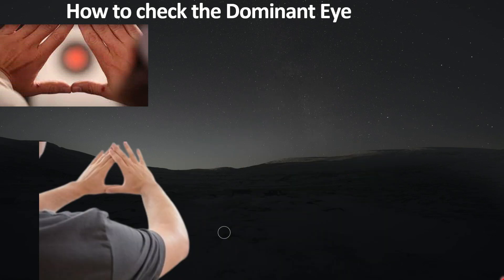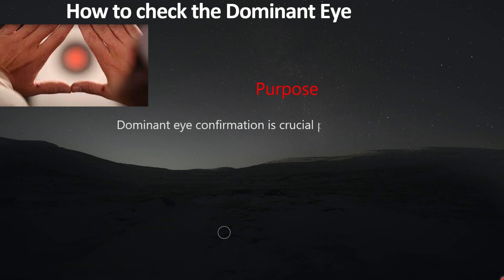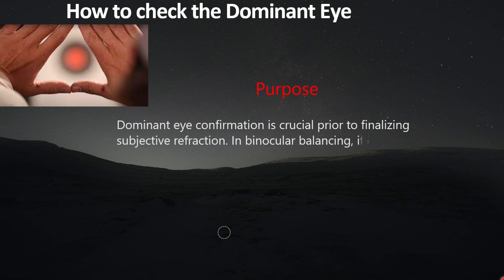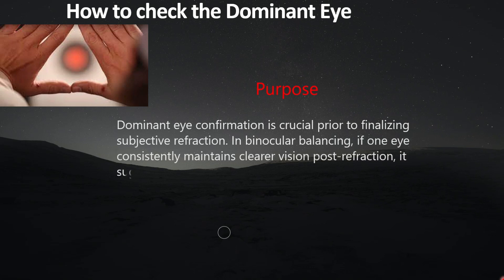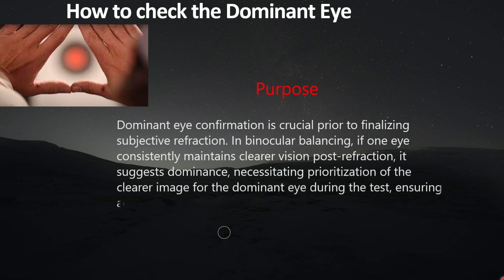First, we need to know why Dominant Eye testing is required and why the Dominant Eye has to be confirmed. Dominant Eye has to be confirmed before finalizing the final subjective refraction. During binocular balancing, if the clarity of both eyes is not equal after subjective refraction and one eye consistently remains clearer than the other, it indicates that eye may be the Dominant Eye. We have to leave the clearer image in the Dominant Eye during the binocular test, so we must confirm which eye is the Dominant Eye — the one relied upon when both eyes are working together.